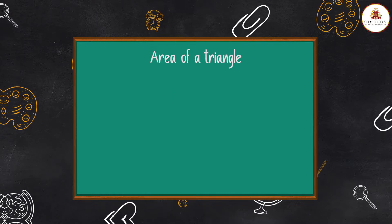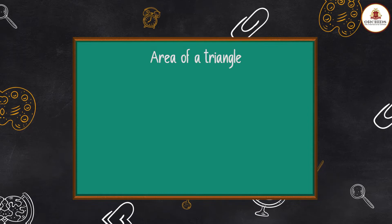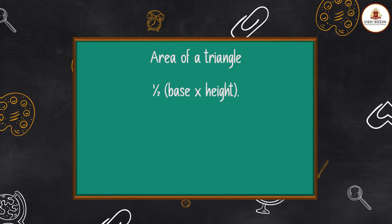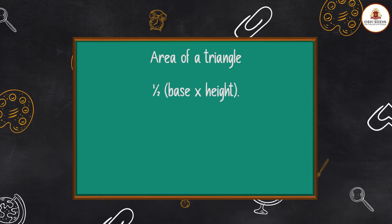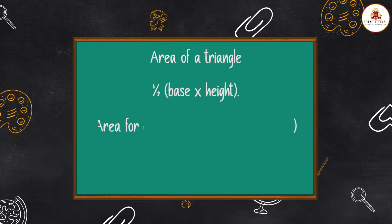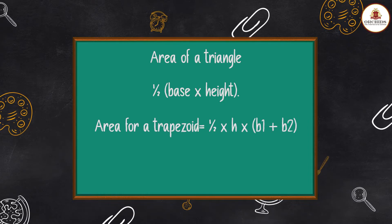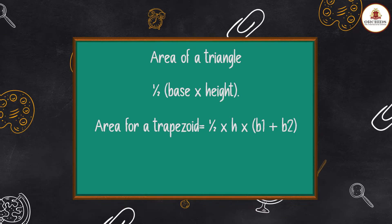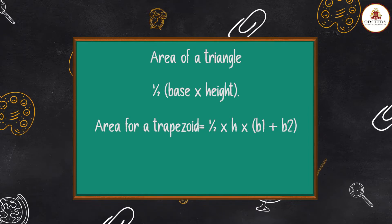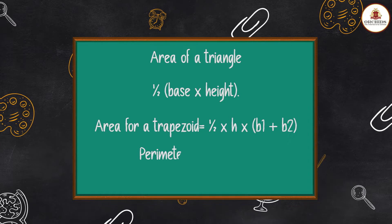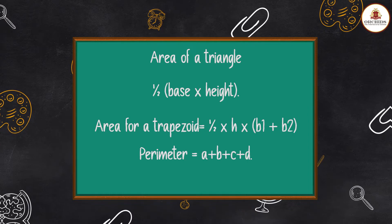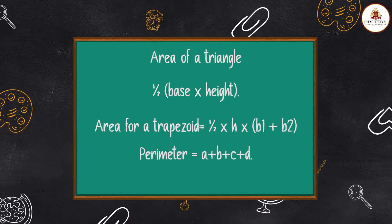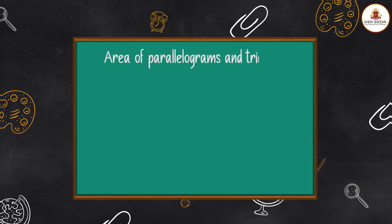The area of a triangle is ½ × (base × height). The area of a trapezoid is ½ × h × (b₁ + b₂), and its perimeter is a + b + c + d. Did you get it, students?